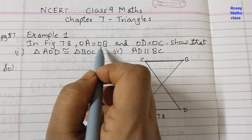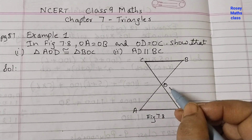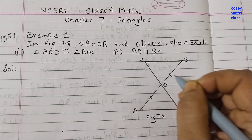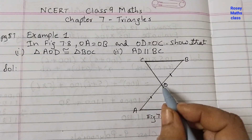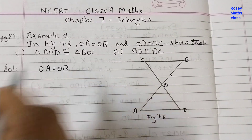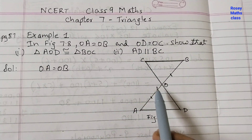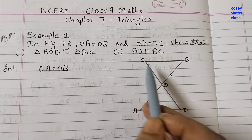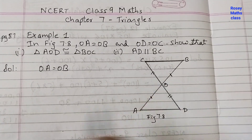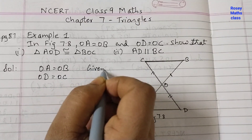OA is equal to OB — this point is O. We will put small vertical marks to indicate this. So OA equals OB, that is what is given. OD is equal to OC — we will put two bars here because for OA=OB we put one bar, so now for OD=OC we put two bars. This is what is given to us.